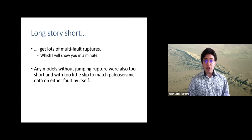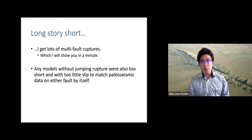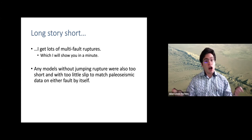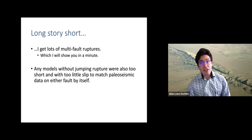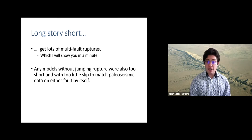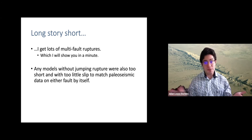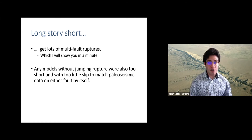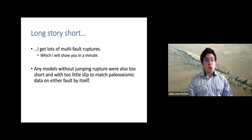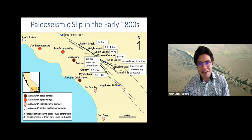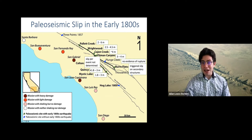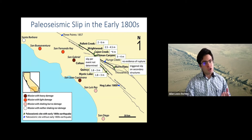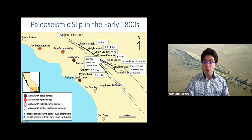Long story short, under these conditions from observations, it is actually very easy to get a rupture to jump between the San Andreas and San Jacinto faults. I wanted to see if it was possible to match the slip per event by having an earthquake on just one fault or the other — and it really wasn't. Any earthquakes that did not jump the step-over between the faults were either too short to match the paleoseismic records, or the amount of slip was just too low. In order to produce something that matches the paleoseismic slip per event, I had to have a multi-fault rupture.